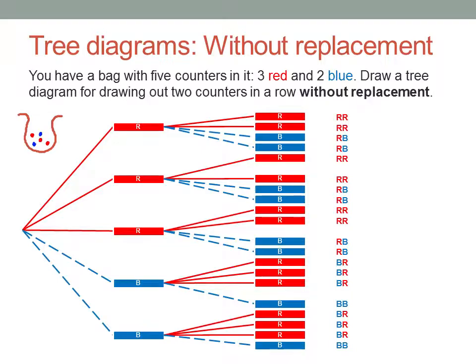Now look at the sample space — five of the outcomes are no longer there, and there are now only twenty possible outcomes. Of course, I could just as easily have drawn the tree this way in the first place, without drawing it with replacement first and then deleting some parts of it.